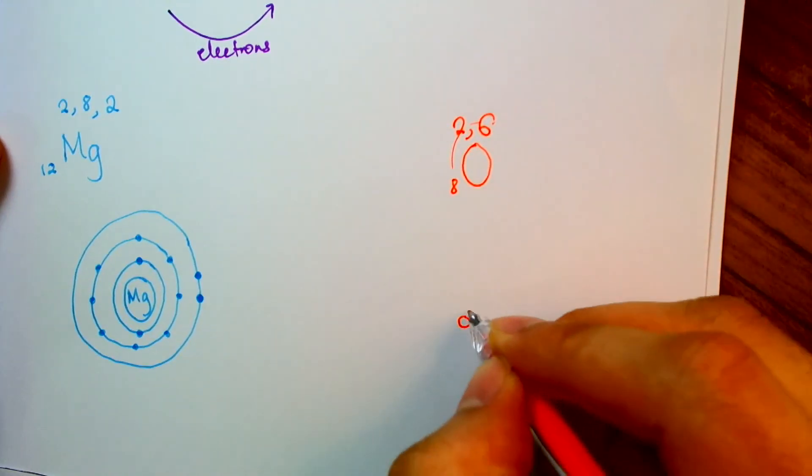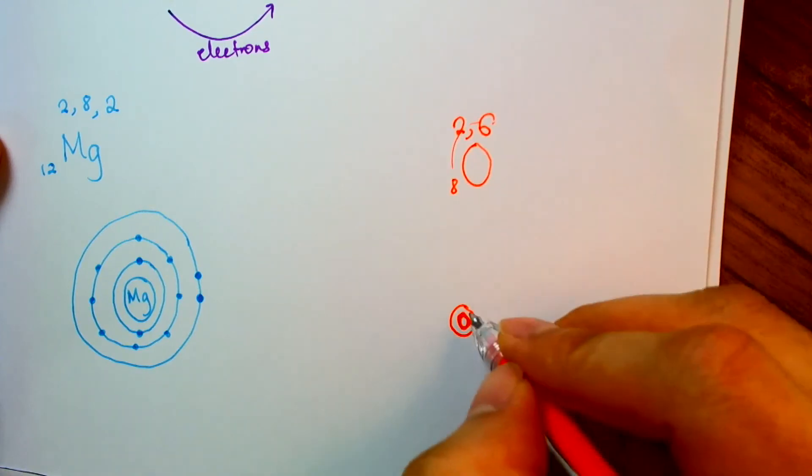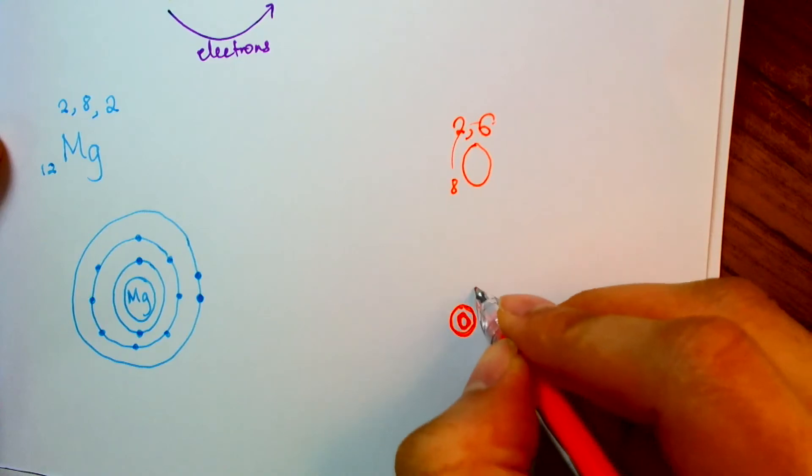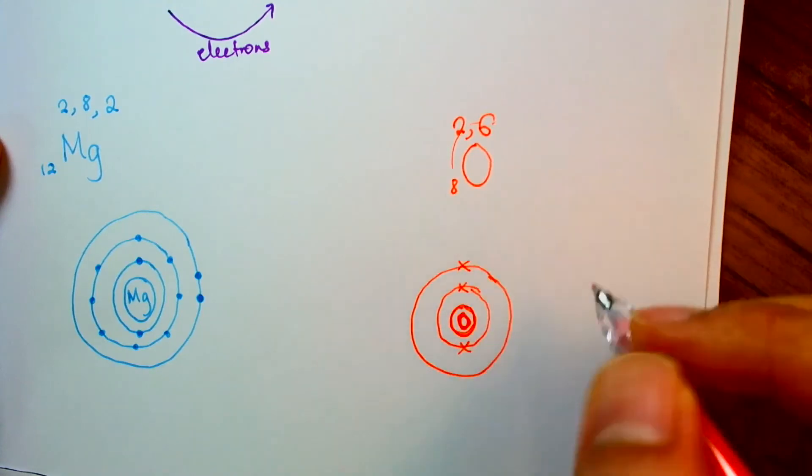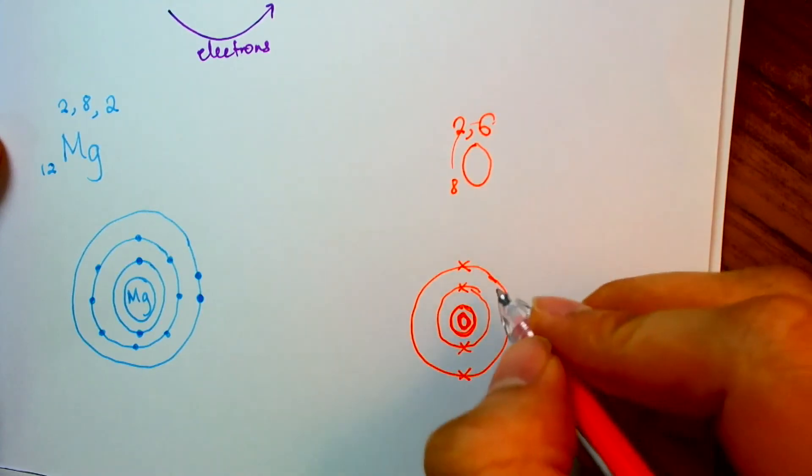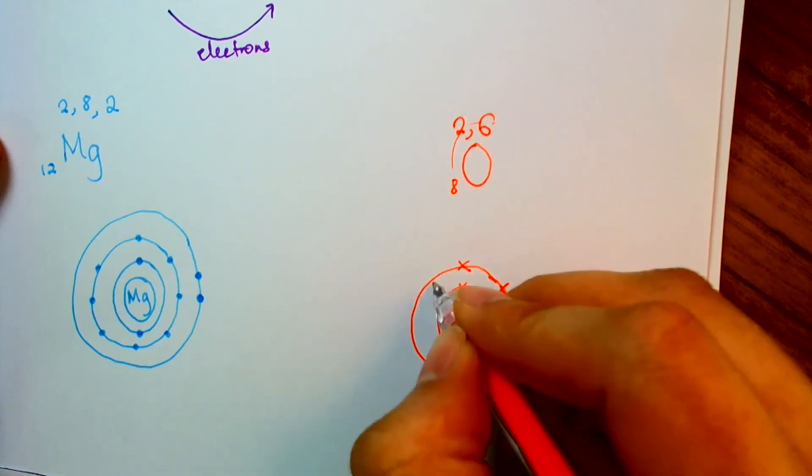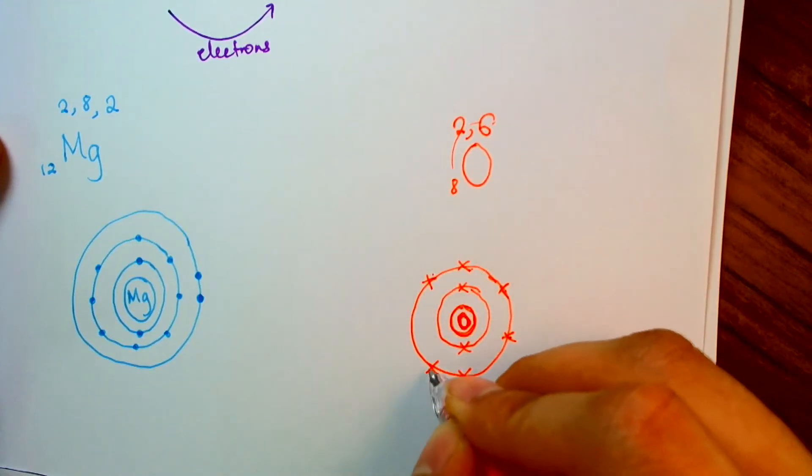So oxygen, O. So there's my nucleus. And in the first shell, I'm going to have 2 electrons. In the second shell, I'm going to have 6 electrons. 1, 2, 3, 4, 5, 6.